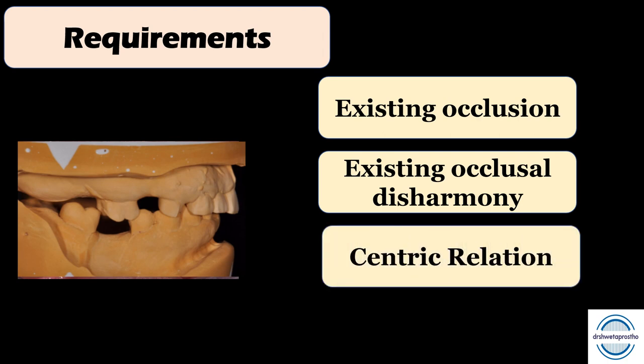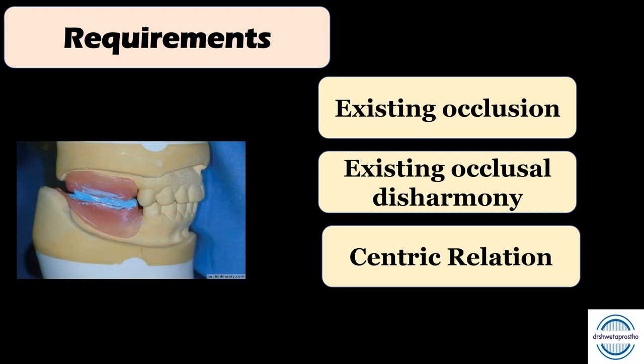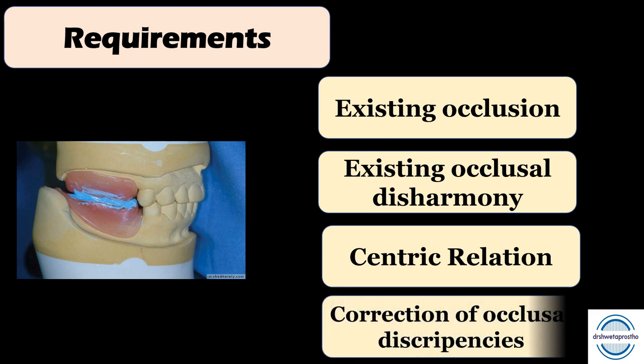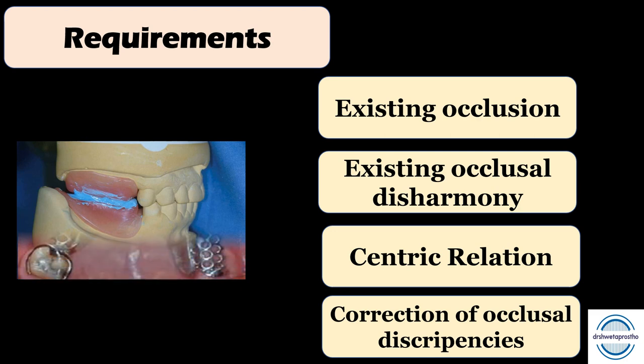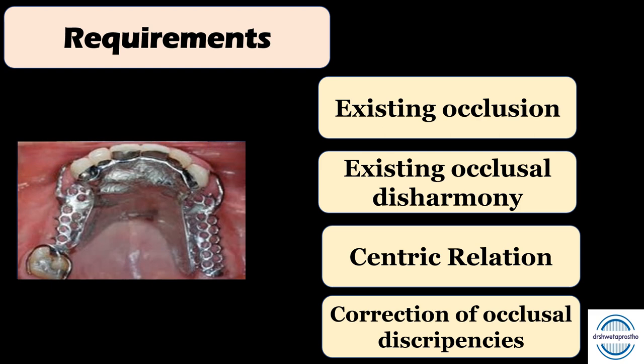Third is the recording of centric relation or an adjusted centric occlusion, which is very important to establish an occlusal scheme. Last, but very important, is the correction of occlusal discrepancies — these discrepancies arise due to the framework fit or the processing and curing of the denture. These discrepancies need to be corrected before the prosthesis comes into function.